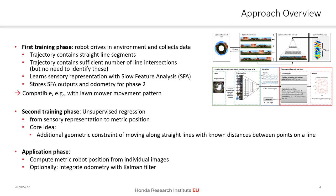In the second training phase, we perform unsupervised regression from the sensory representation to a metric 2D position. The core idea is that we can use an additional geometric constraint of moving along a straight line with known distance between points on a line. Then finally in the application phase, we are able to compute the metric robot position from individual images, and optionally we can also integrate the odometry with a Kalman filter to further improve the accuracy.